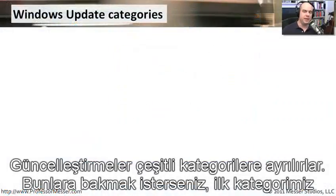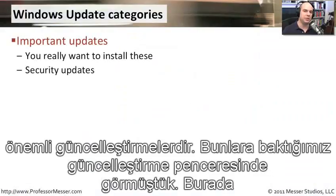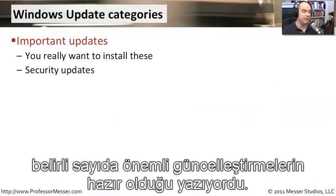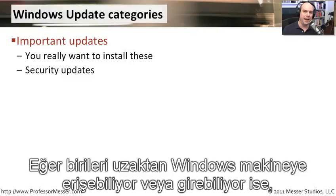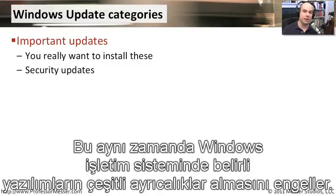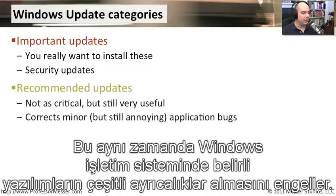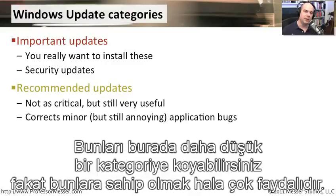There are different categories of updates to look at. The first category is important updates — you really want to make sure you have these on your system. Generally these are security updates, so that if somebody has a way to get into a Windows machine, installing this update would prevent them from doing that, and also prevent certain types of software from taking advantage of vulnerabilities. There are also recommended updates — not quite critical, but still very useful to have.